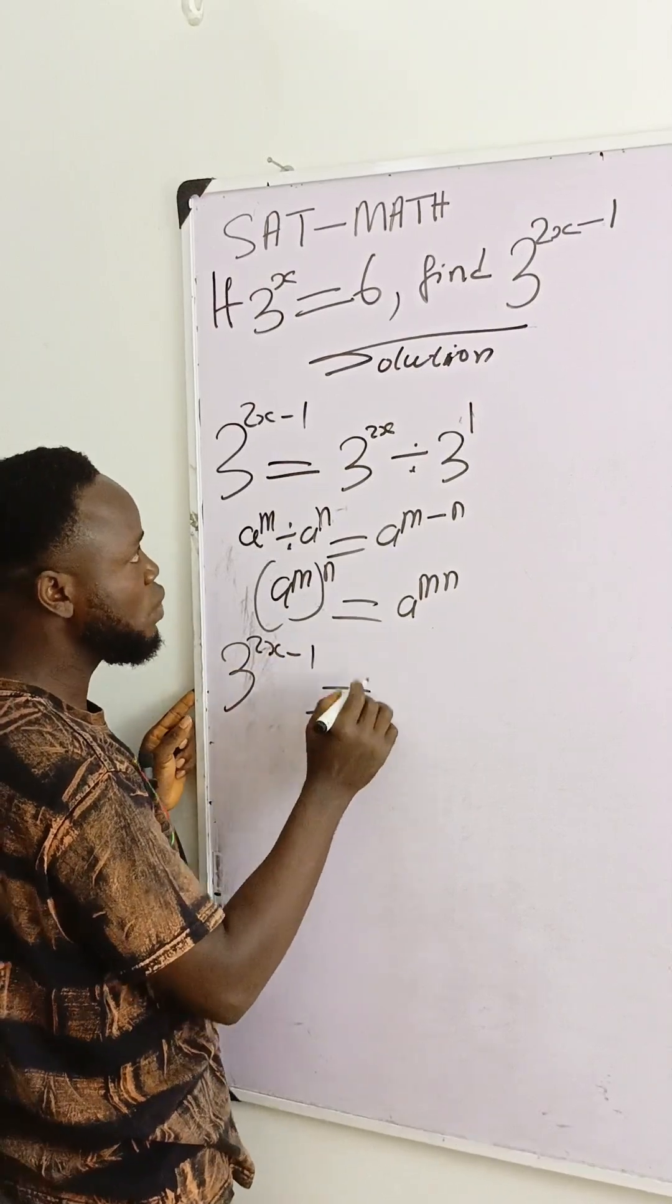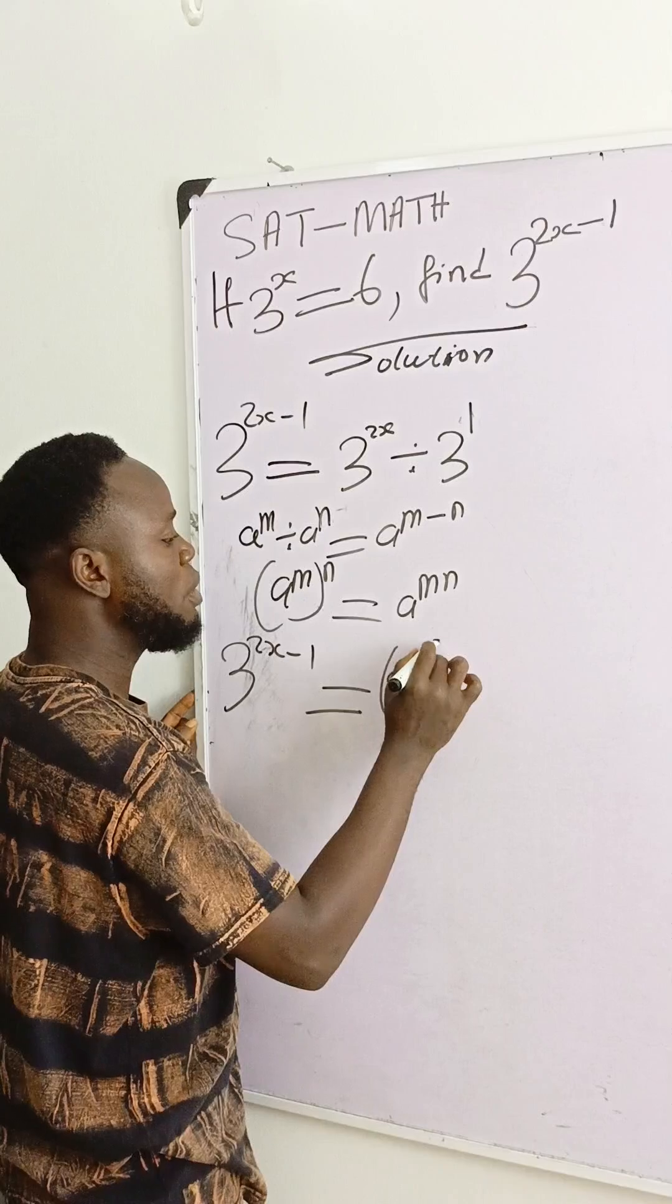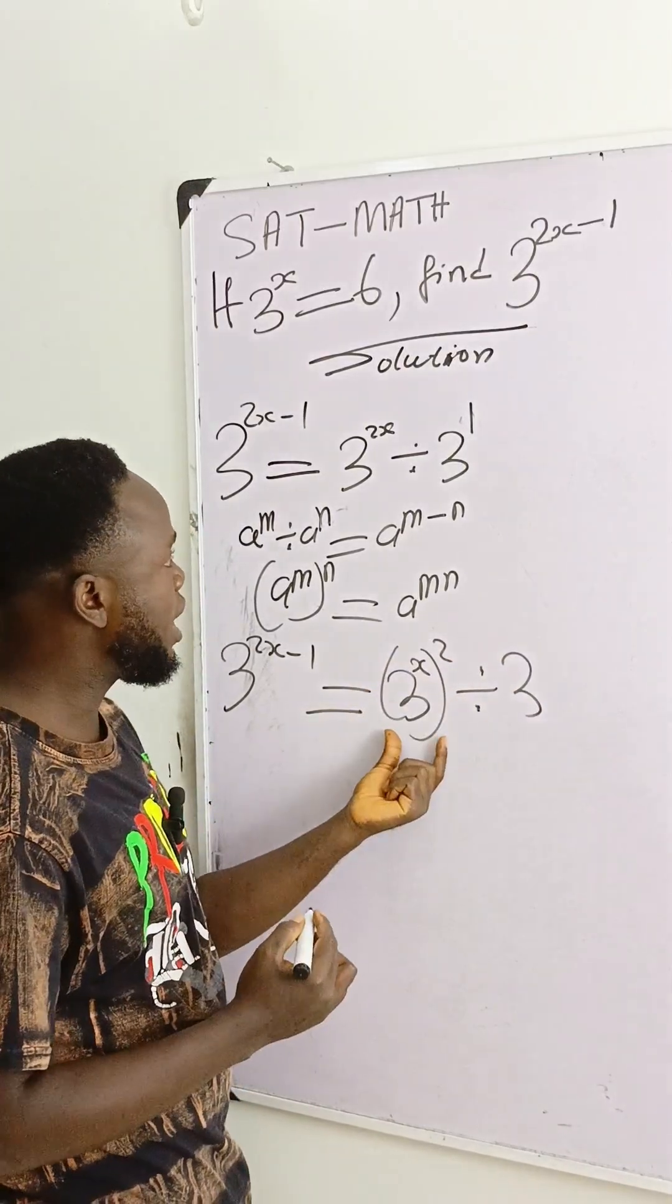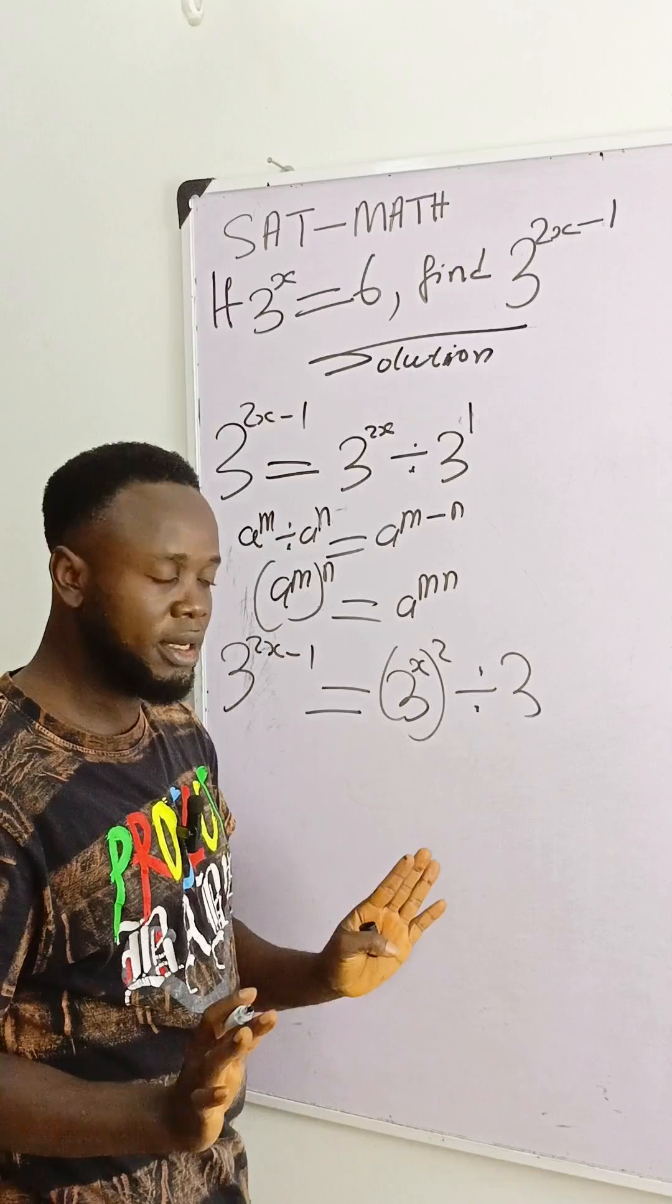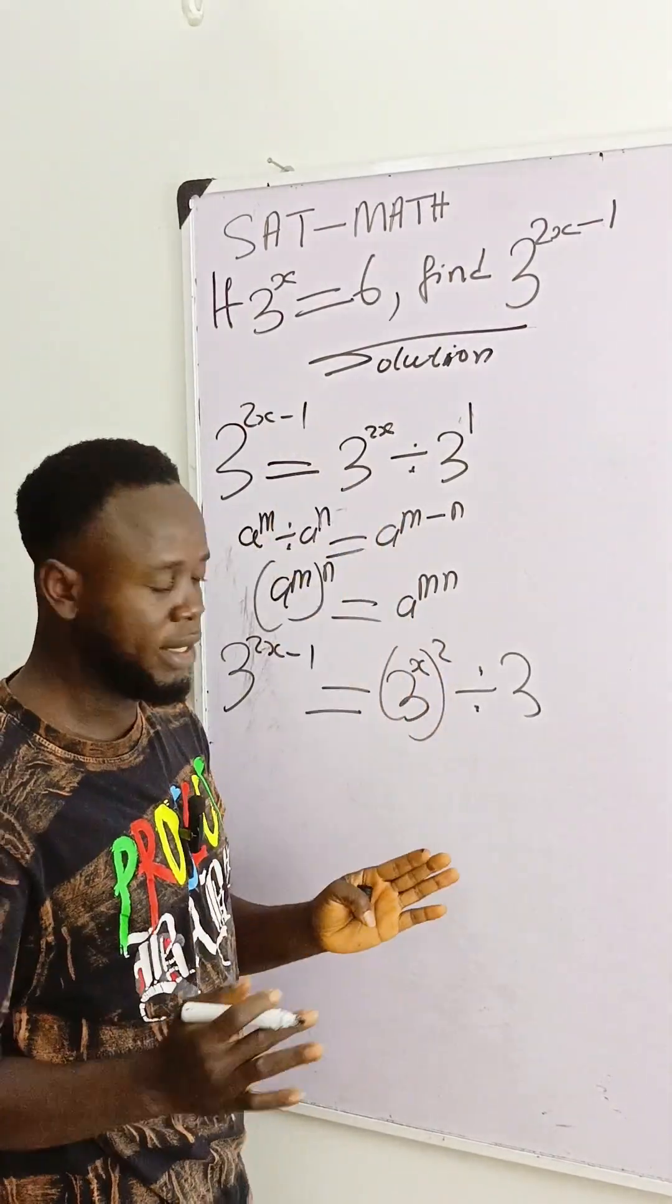3 raised to power 2x minus 1 equals 3 raised to power x, raised to power 2, divided by 3. This and this are the same thing, because if I say x times 2, it gives me 2x.